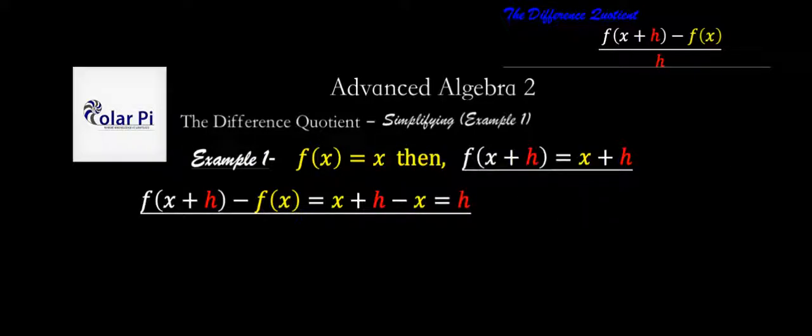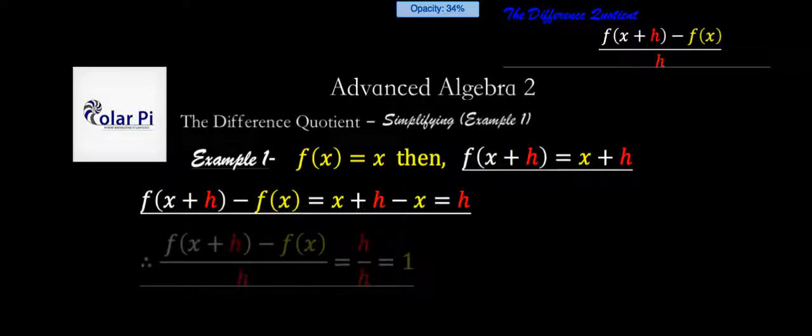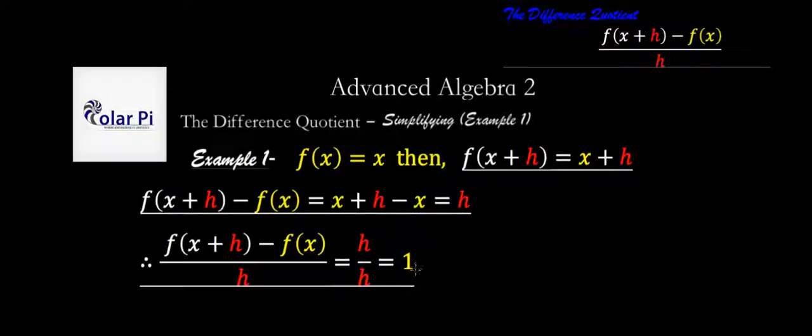And so when we divide this numerator of the difference quotient by h, we just get h over h, which is one. And so this is the result of evaluating the difference quotient for the function f of x equals x. We'll see progressively more challenging examples as we work through examples two, three, four, and five. Keep watching. Take care.